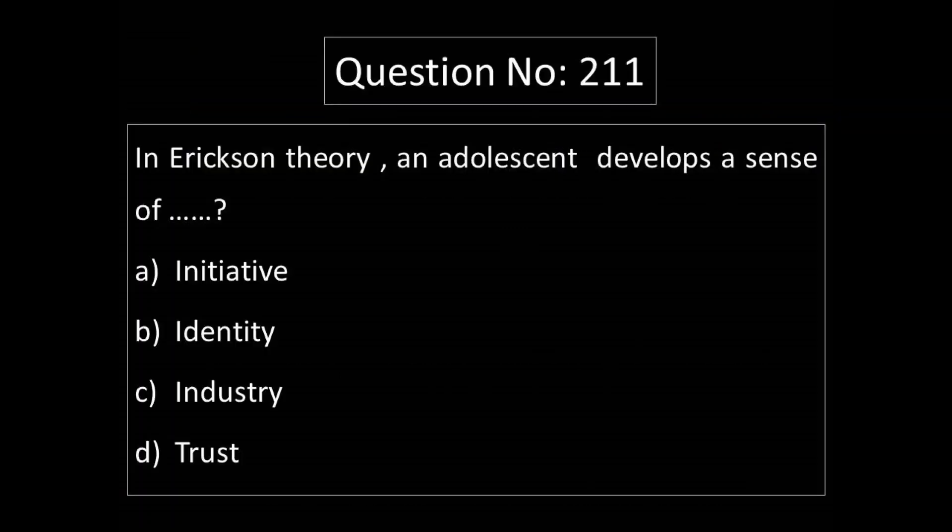Question No. 2-11. In Erikson's Theory, an adolescent develops a sense of dash. Option A: Initiative. Option B: Identity. Option C: Industry. Option D: Trust.